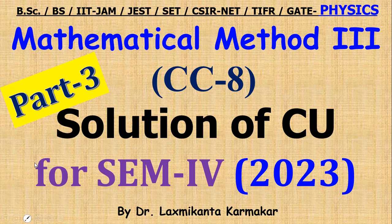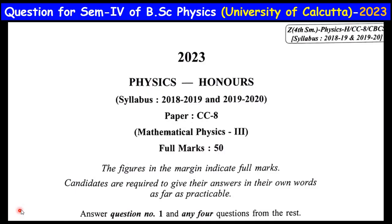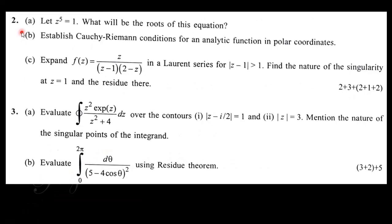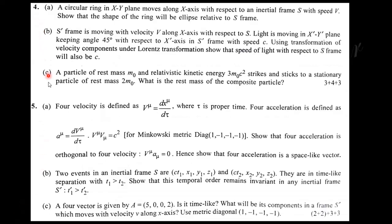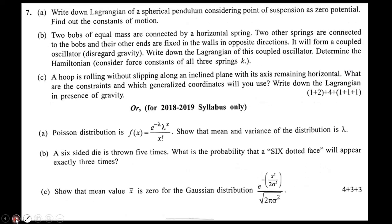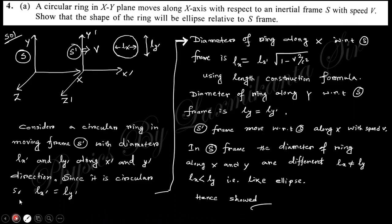Hello, welcome everyone. This is Part 3 for the solution of CC8, that is Mathematical Methods 3 of the year 2023, Physics Honours under University of Calcutta. This is the question paper. Question number 1 was discussed in Part 1, questions 2 and 3 in Part 2, and in this Part 3 we will discuss questions 4 and 5. The upcoming session will continue with questions 6 and 7.